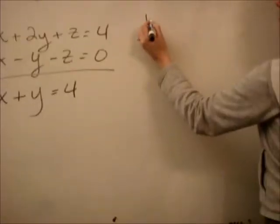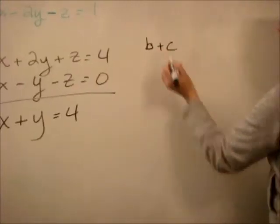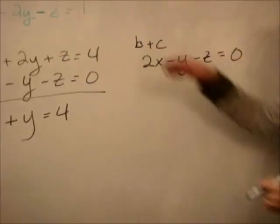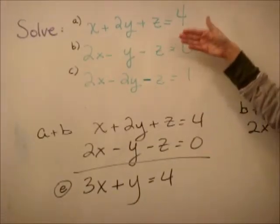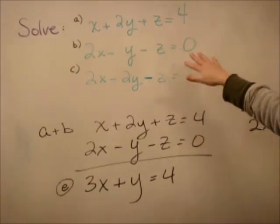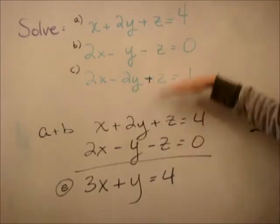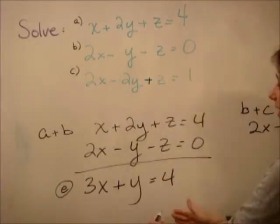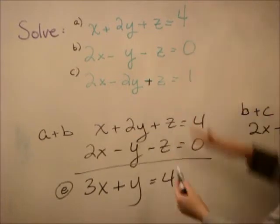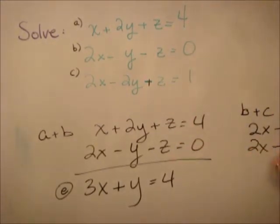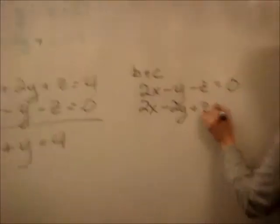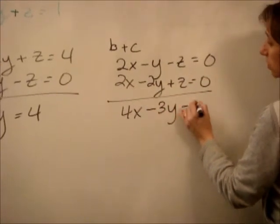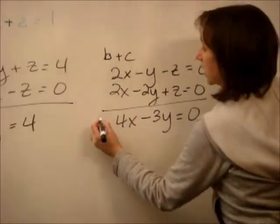Now we're going to add equations b plus c together. So we get 2x minus y minus z equals zero, and 2x minus 2y plus z equals zero. The reason I'm doing b and c is that adding these two together will eliminate the z again. We add them together and get 4x minus 3y equals zero.